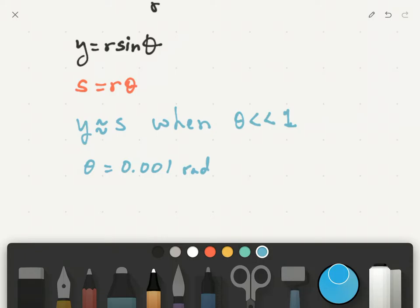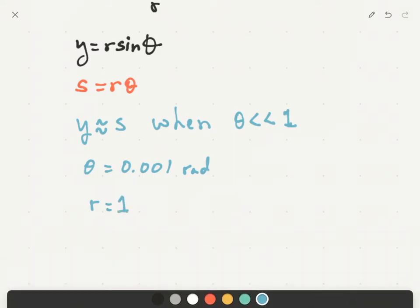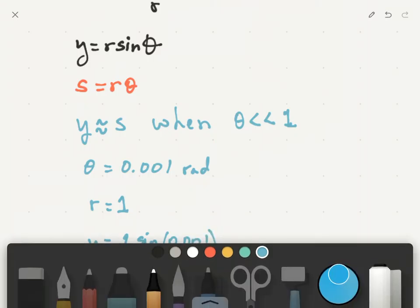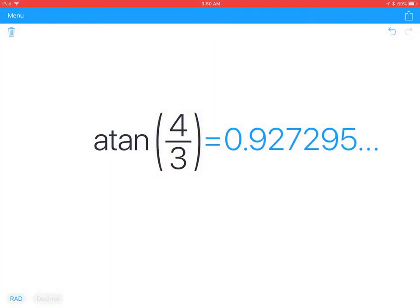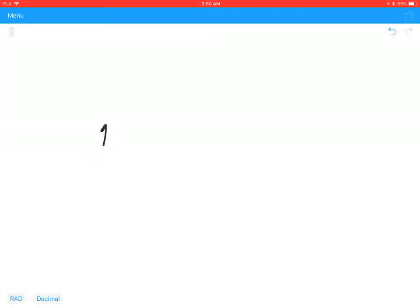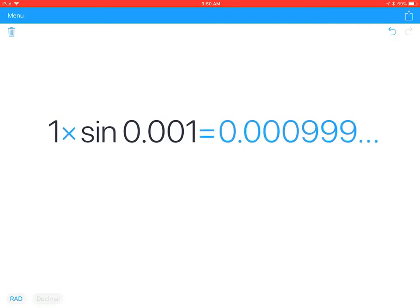So if we have R is equal to 1, that means that Y is equal to 1 times the sine of 0.001. So let's go ahead and pop that up, get rid of this. So we'll have 1 times sine of 0.001 radians. So you see how we're getting this 0.000999?